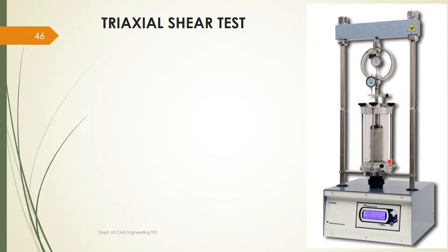Due to the water present around the soil sample, a confining pressure is applied to the soil sample. Along with this confining pressure, in the axial direction we give an additional stress known as deviator stress. So on the soil sample there are two types of stresses: one is the confining pressure provided through water, and the other is the deviator stress which acts in the axial direction. The confining pressure remains constant while the deviator stress is varied and values are noted.